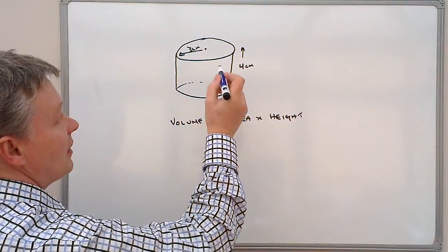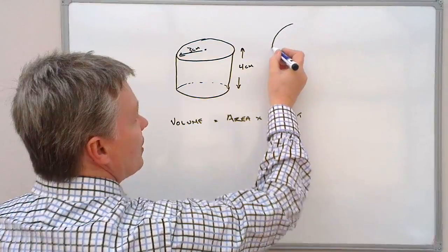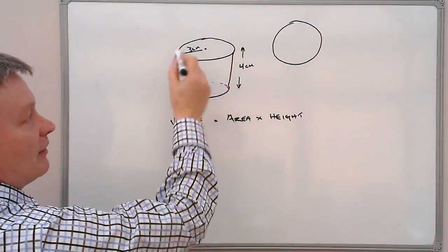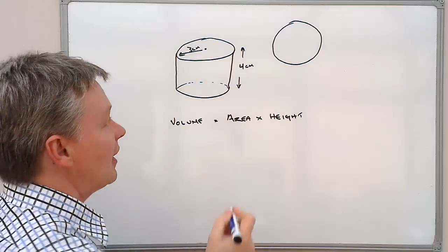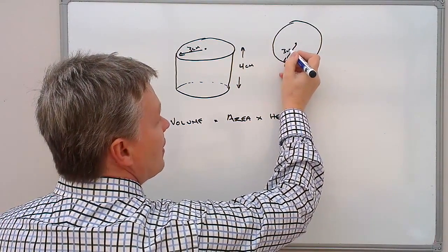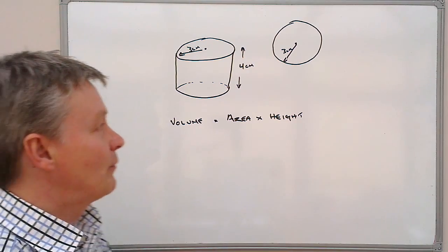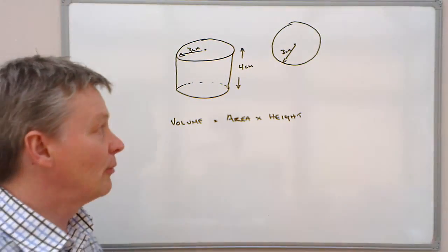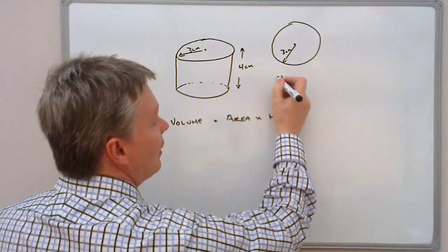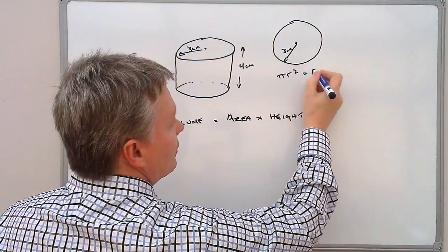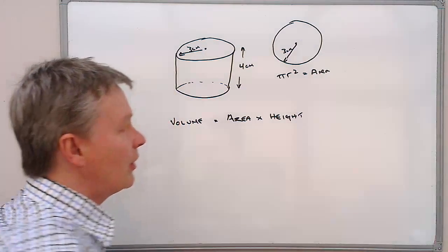So what I'm going to do is just draw that to one side as a circle. And this bit here is the bit that's sitting there. And it has a radius of three centimetres. So to work out the area of a circle, the formula that we use is π r squared. And I'm just going to put that equals area.